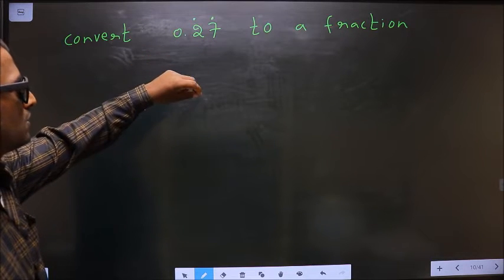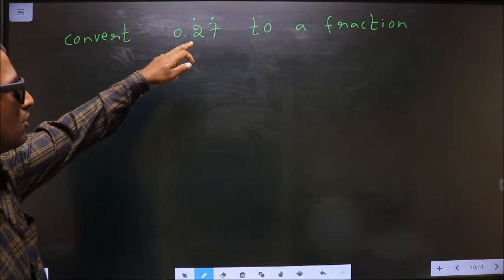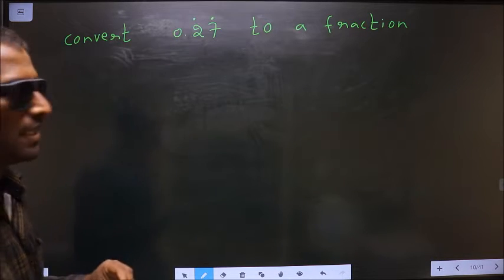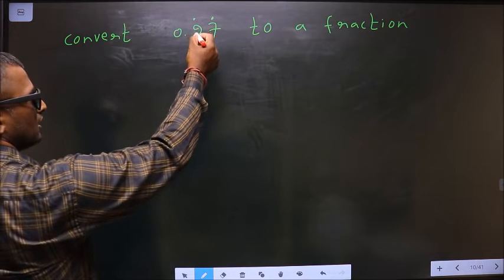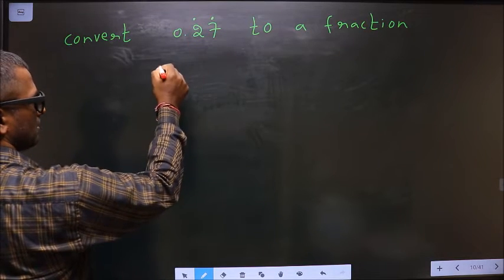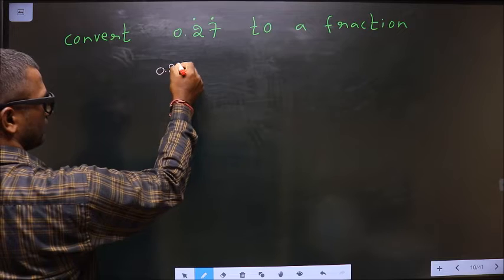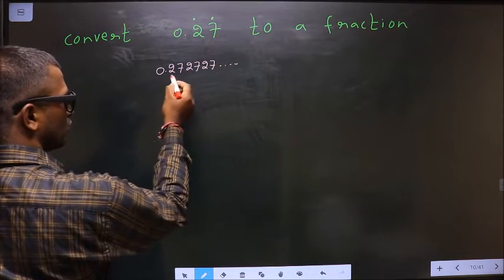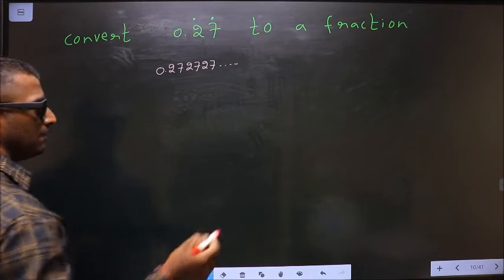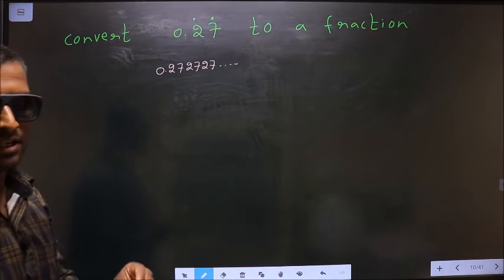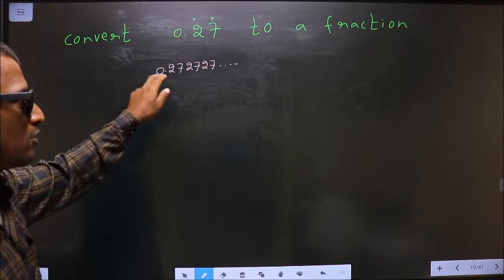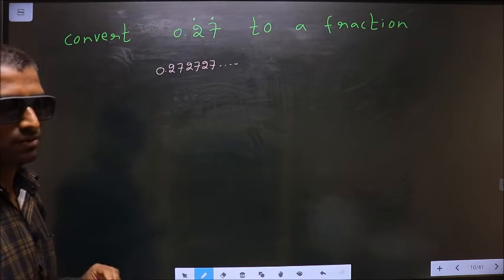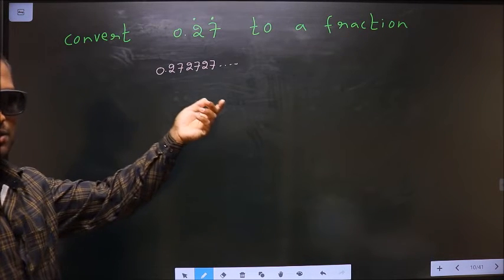Convert 0.27 recurring to a fraction. The dot is on 2 and also on 7, which means 272727 are being repeated. That is the meaning of the dot — dot is on 2 and 7, so 272727 keep repeating. Now, how do I convert this to a fraction?